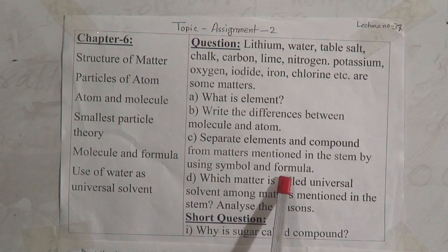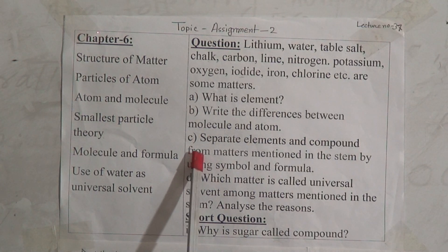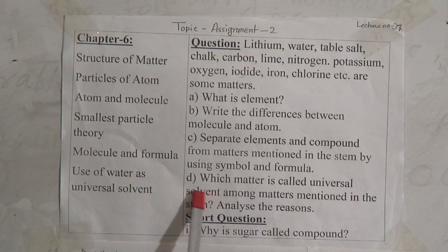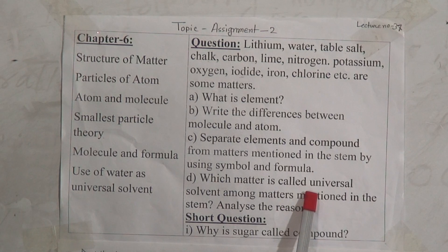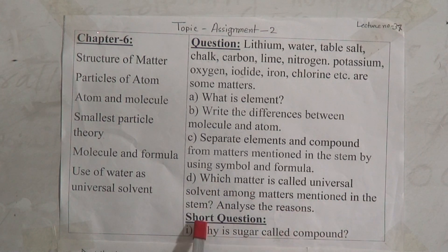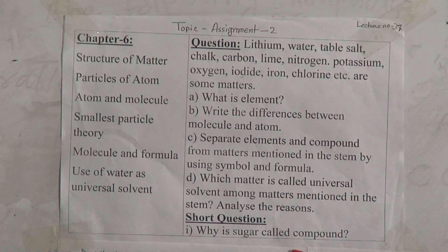We have done questions A, B, and C in our lecture number 36. Today we will do question D and a short question. Question D is: Which matter is called universal solvent among the matters mentioned in the stem? Analyze the reasons. The short question is: Why is sugar called a compound?